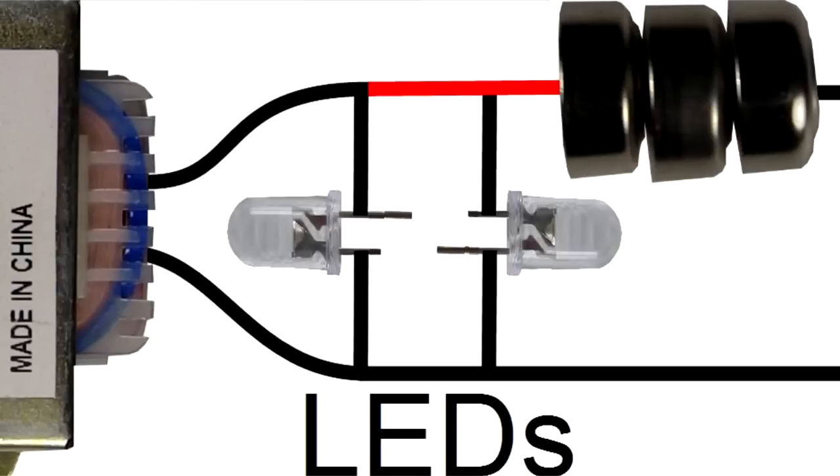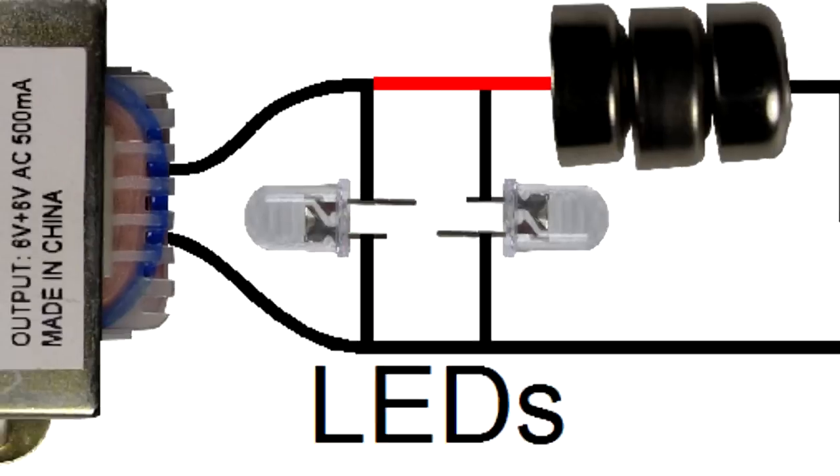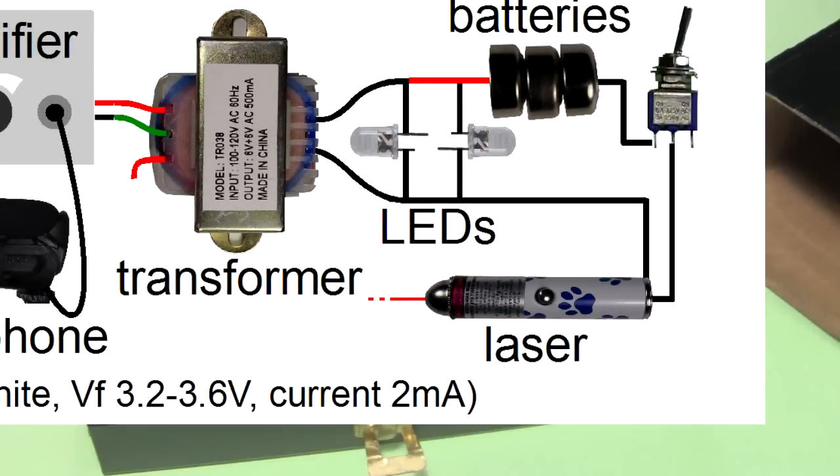Notice that the LEDs are connected in opposite ways. The long leg of one is here, and the short leg is here. For the other one it's the other way around. The LEDs are there to protect the laser. If the voltage gets high enough, then the laser will start conducting enough current to damage it.